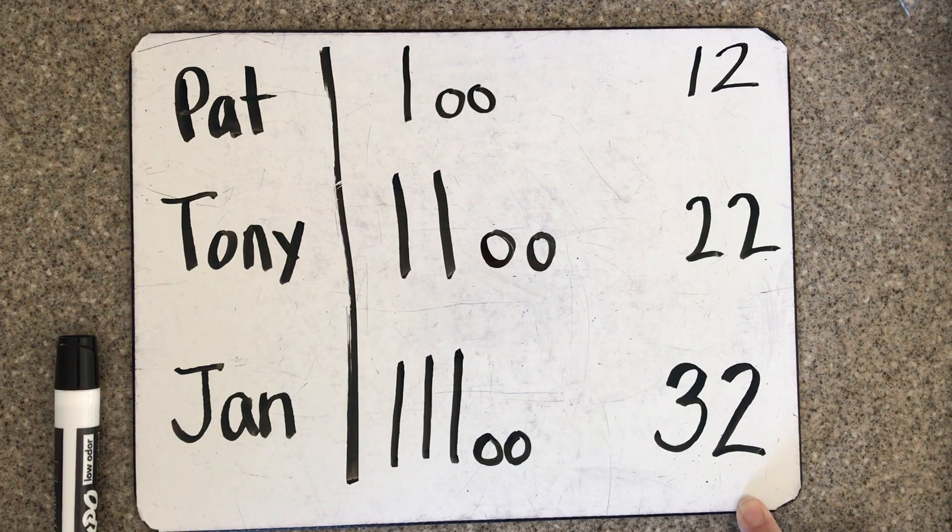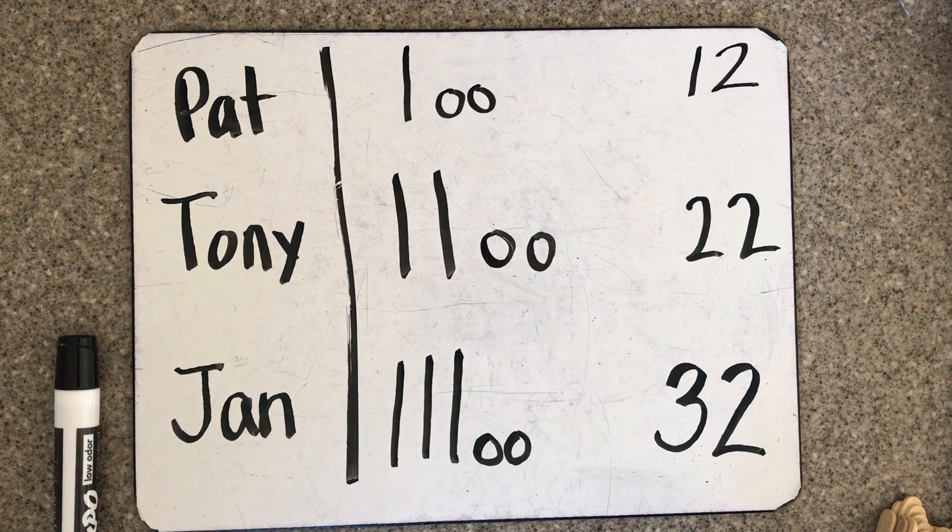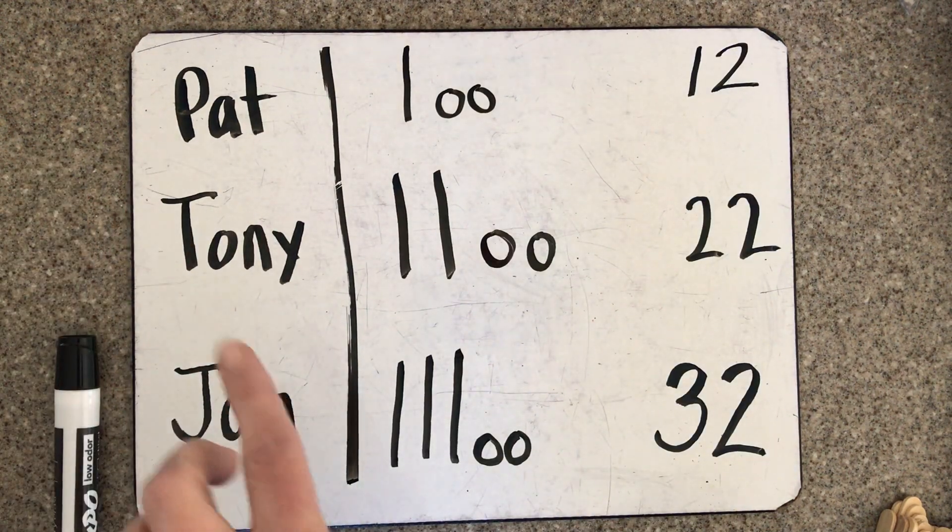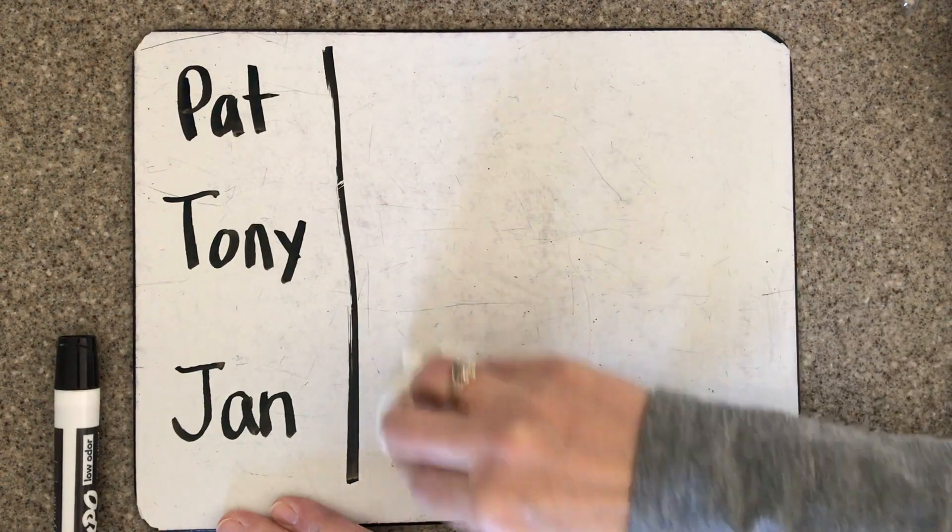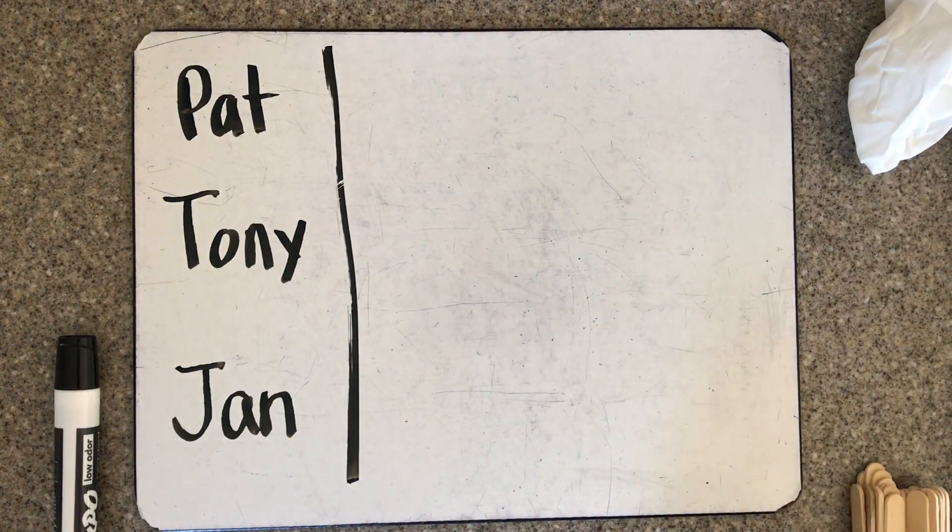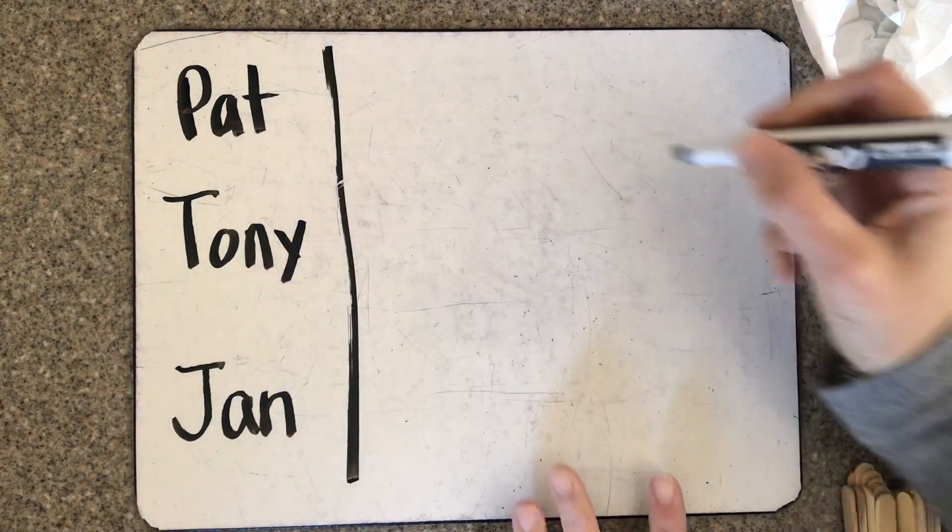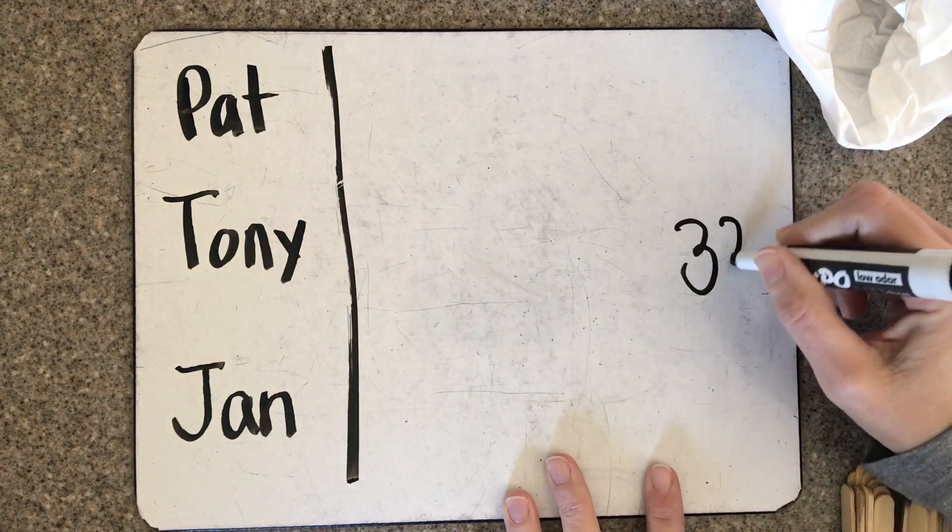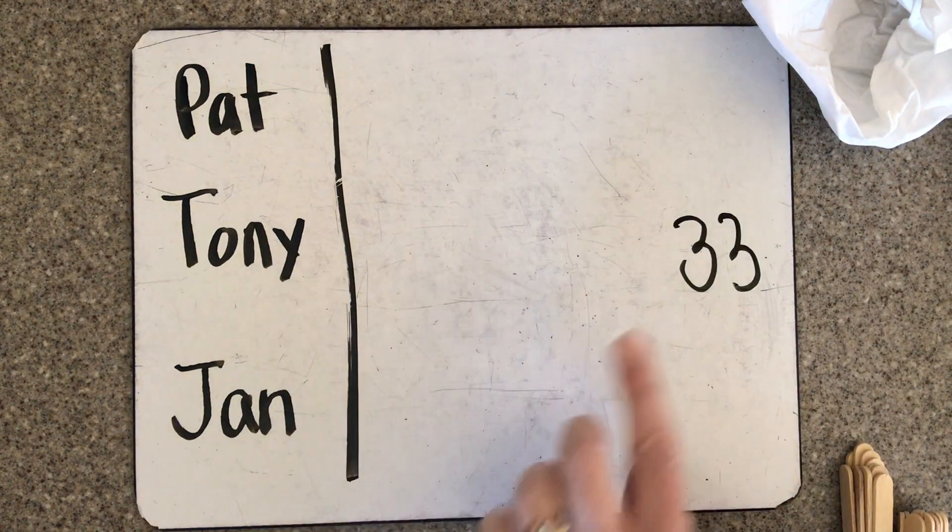We're going to try one more before we show you your work for today. We're going to stick with Pat, Tony, and Jan, but we're going to change those numbers. We are starting with Tony has 33 markers this time. I'm going to draw in three tens and three ones.